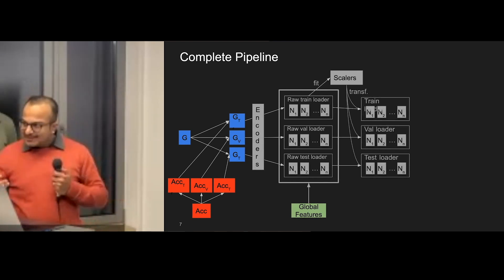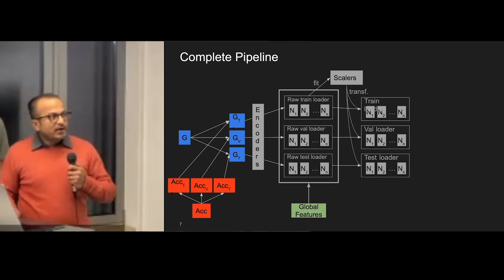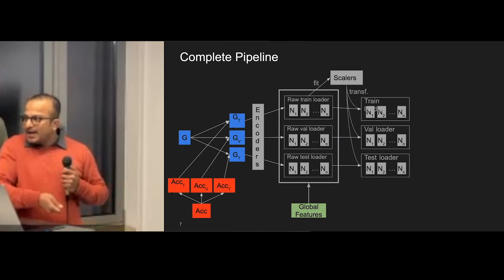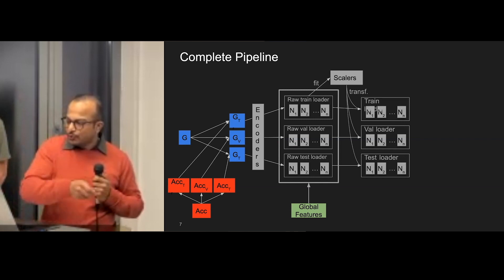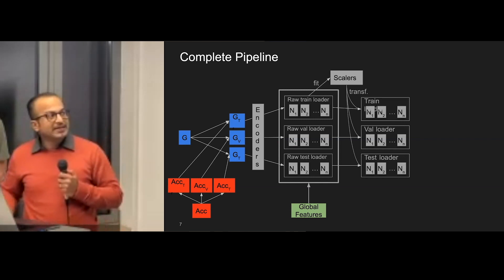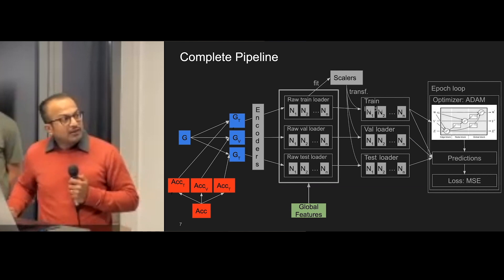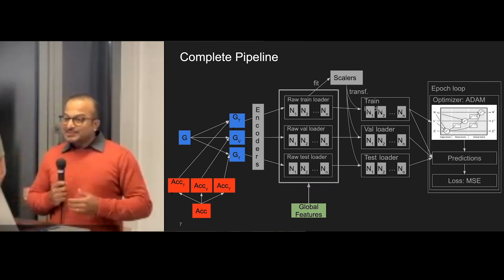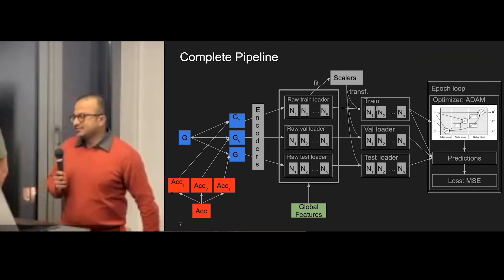Once we have this dataset, we feed it to the model, which considers all the neighborhood triplets and solves the problem of finding accident frequency at a given node and given edge. And now Onur will explain what the results look like.